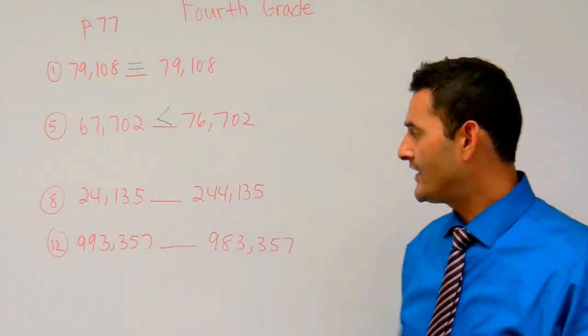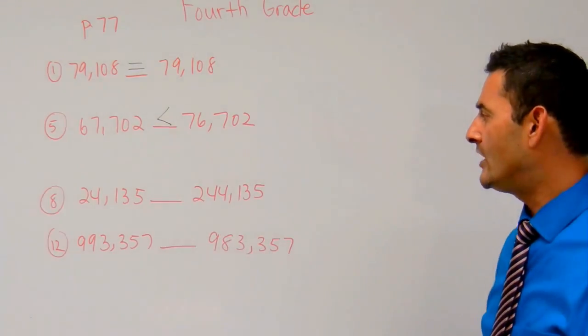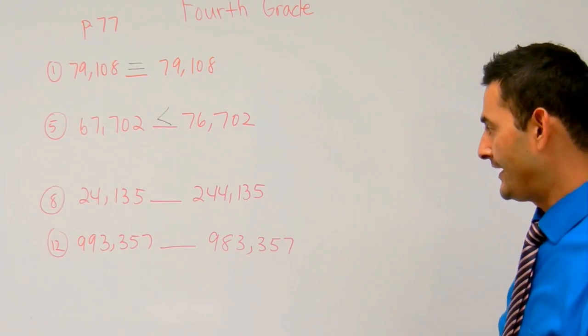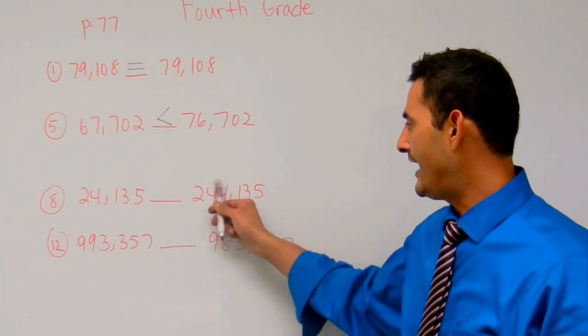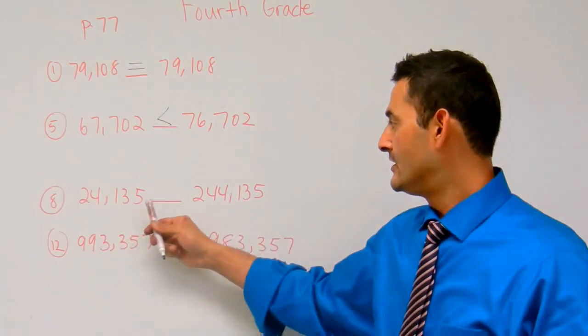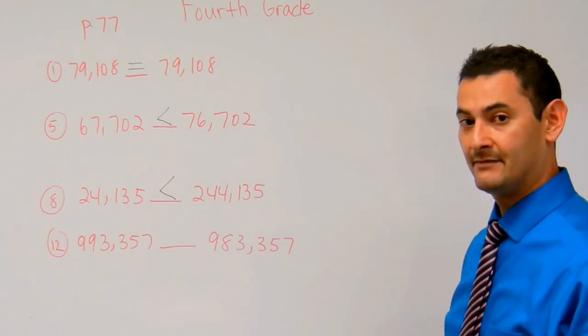Number 8 reads 24,135 and then 244,135. As you can see here, here I have a number in the hundred thousands place. Here I don't. So this is less than, and we're just going to write a less than symbol.